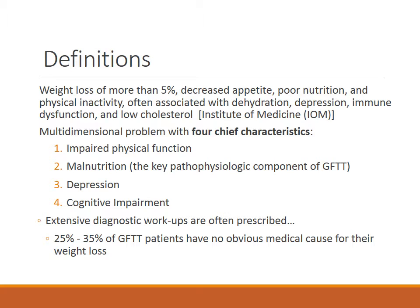There will also be an increase in the oldest old, defined as those 85 years and older. The definition includes weight loss of more than 5%, decreased appetite, poor nutrition, and physical inactivity, often associated with dehydration, depression, immune dysfunction, and low cholesterol. This is the Institute of Medicine definition for geriatric failure to thrive. It is a multidimensional problem with four chief characteristics: impaired physical function, malnutrition — which is the key pathophysiologic component — depression, and cognitive impairment.